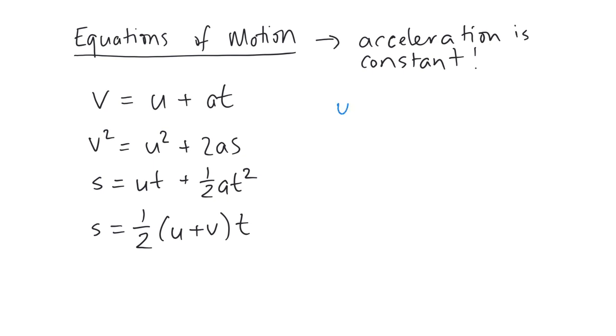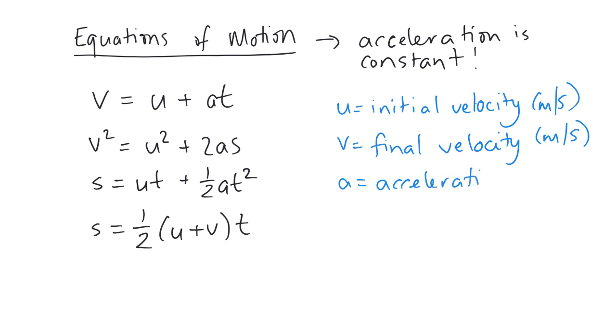U then stands for the initial velocity, and that's in meters per second. V then is the final velocity, and that's again in meters per second. A is the acceleration, and that's meters per second squared.